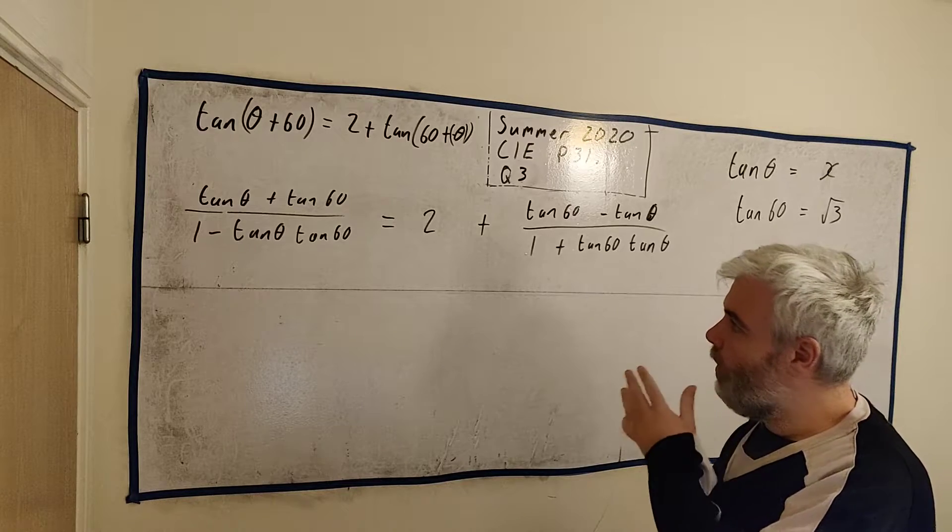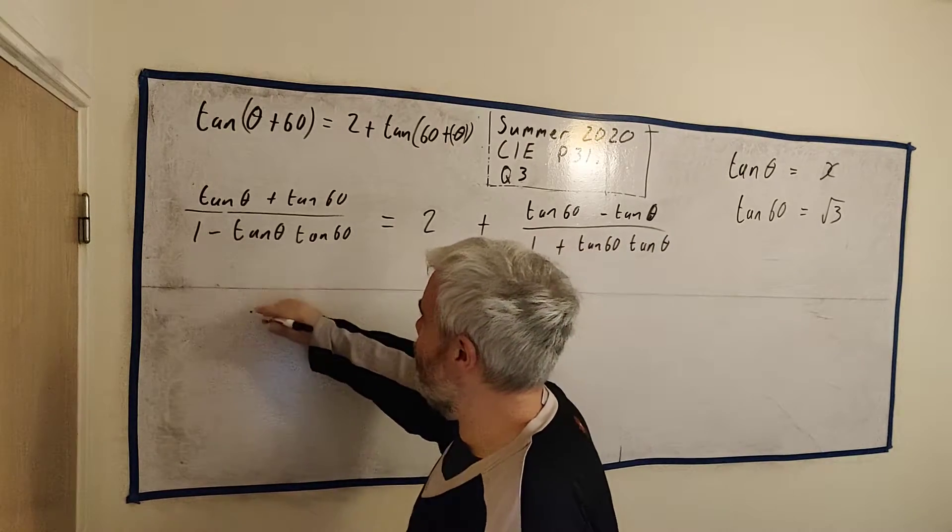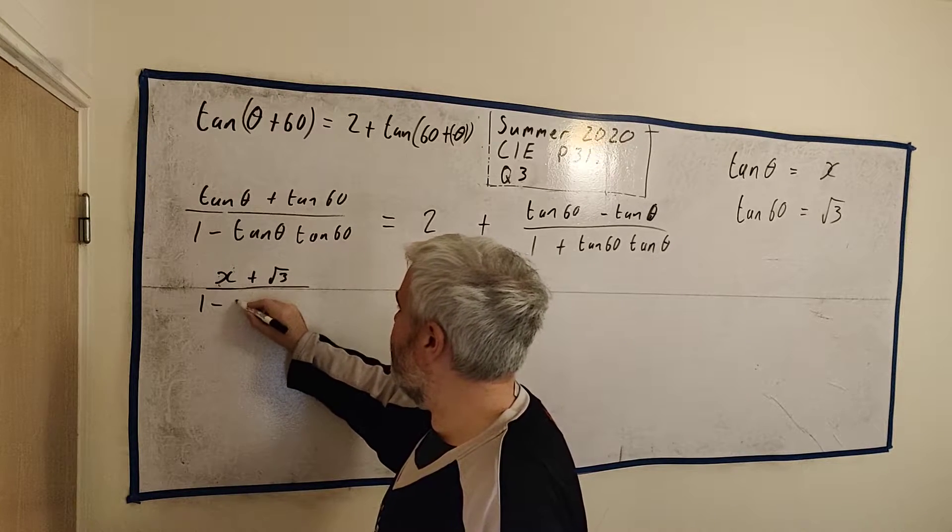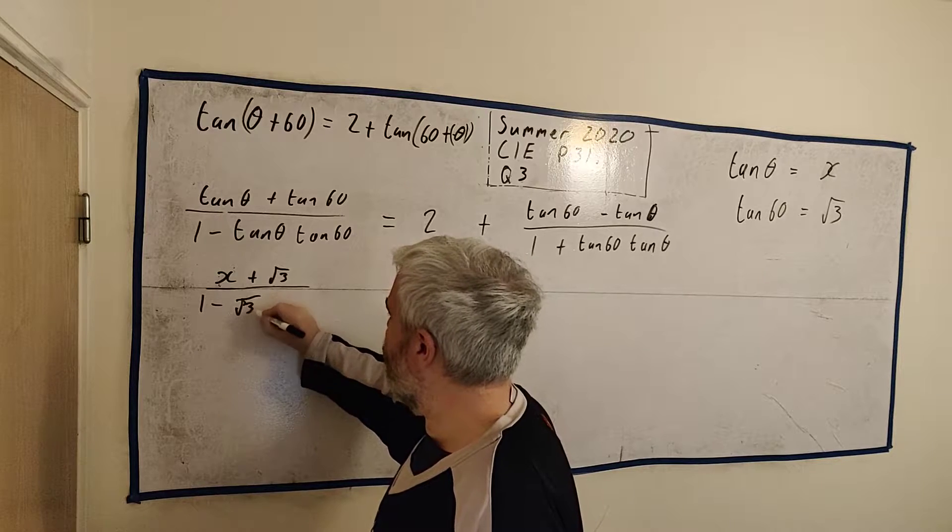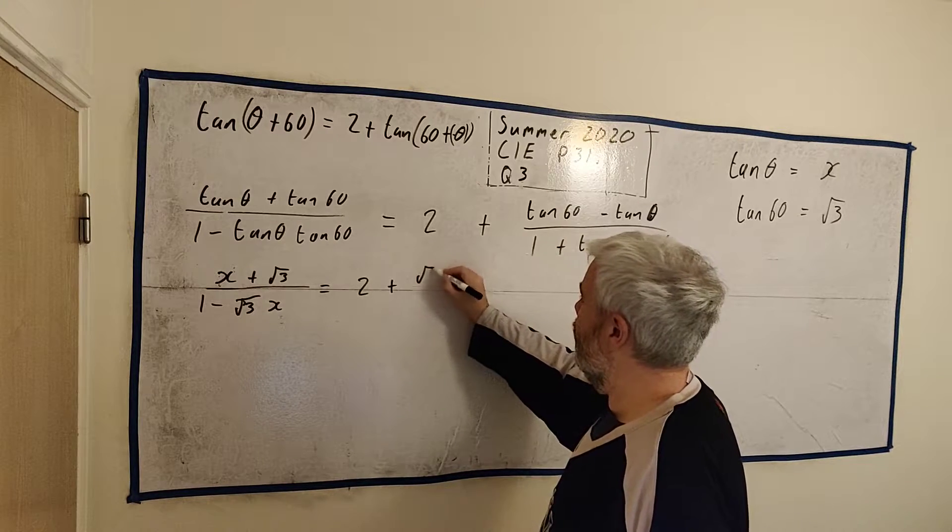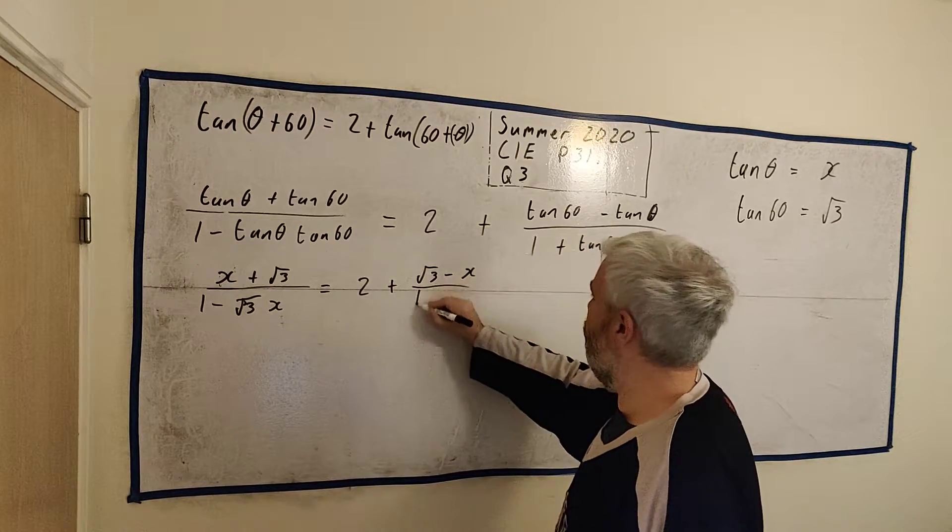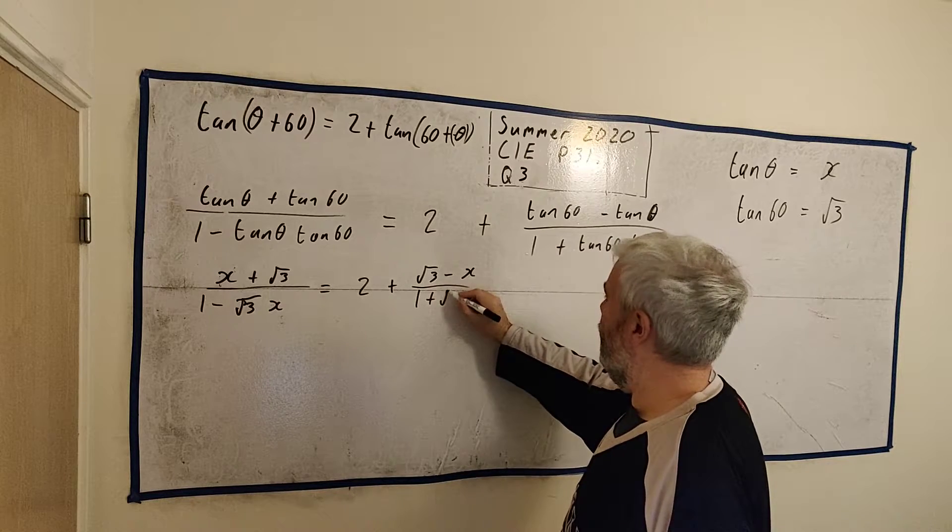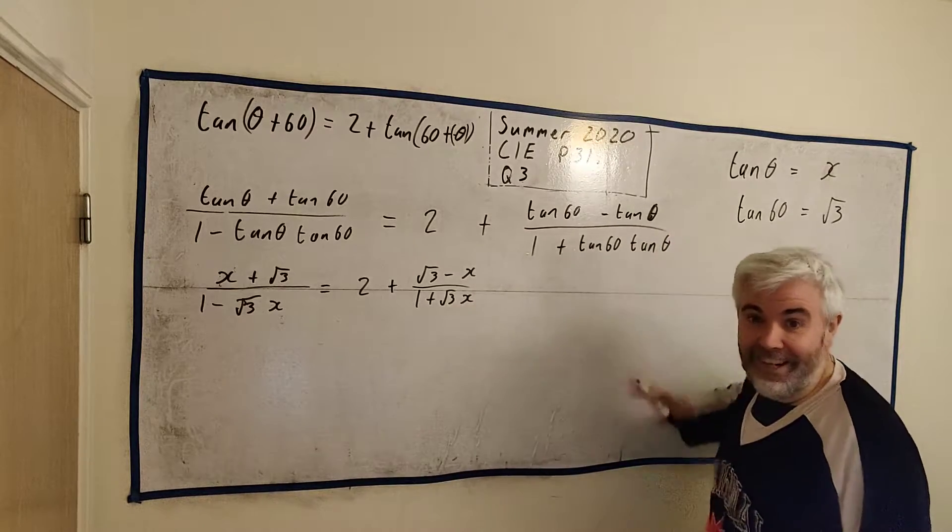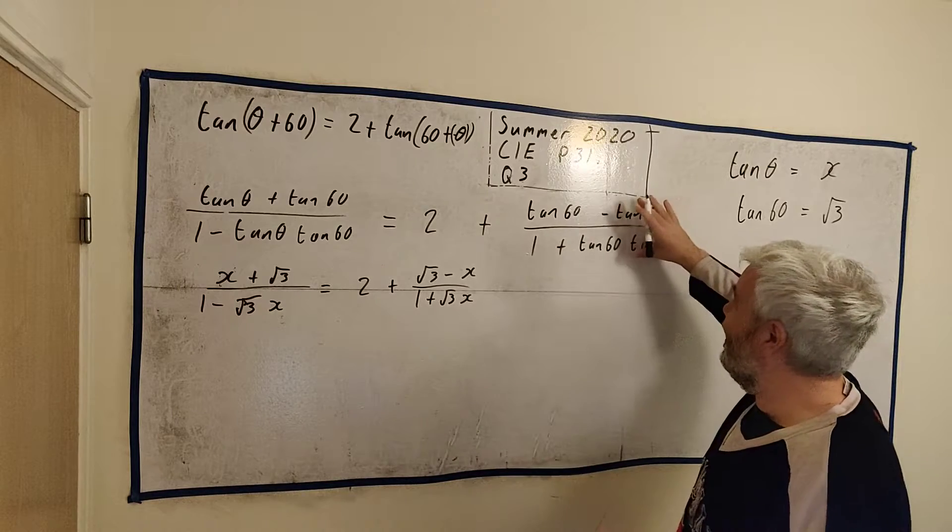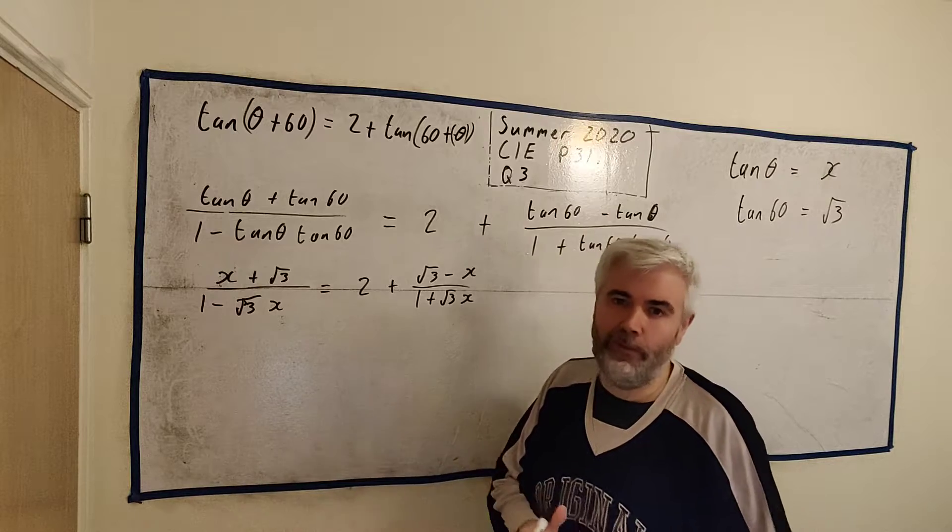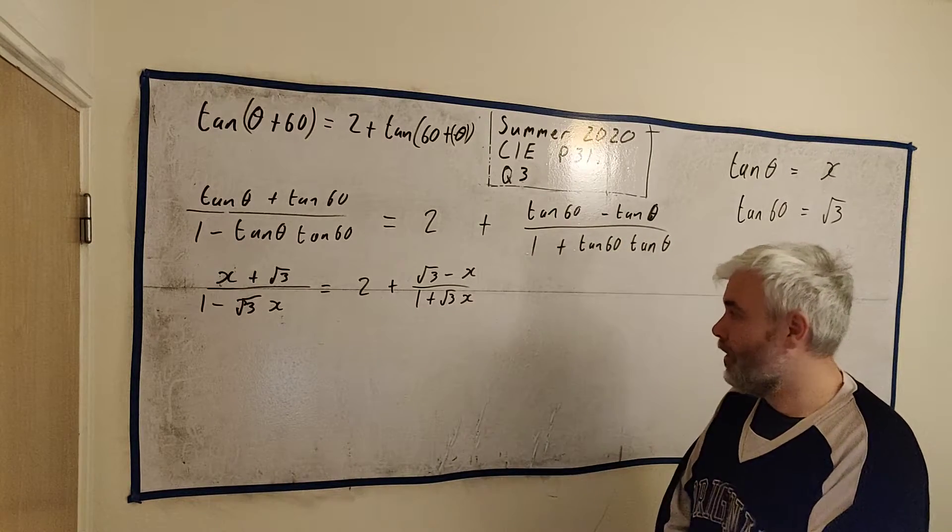So let's go ahead and rewrite this just once. Let's go X + √3 over 1 - √3X equals 2 + √3 - X over 1 + √3X. This is a lot more manageable of a problem than this. That's why I think most students make mistakes. They try and use this entire big thing and your page just becomes filled with letters and numbers and mistakes happen.